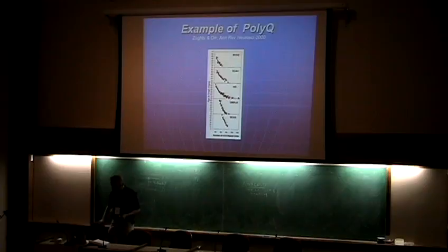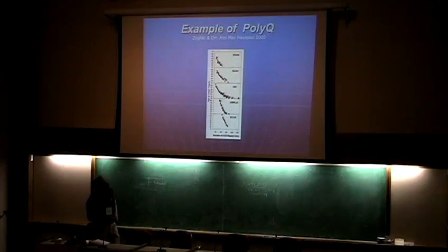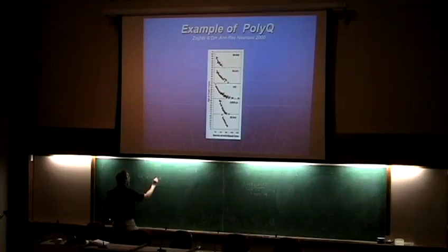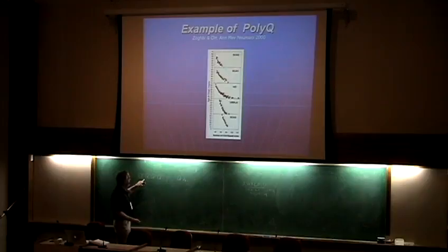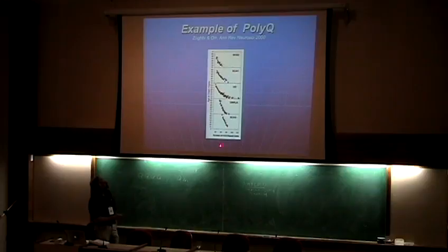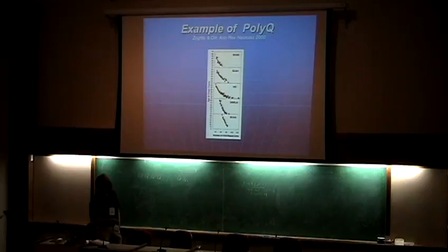A little bit about poly-Q diseases and why they might be amenable to such biophysical treatments. In these proteins, you wind up with continuous stretches of just glutamine being expressed. You have in your protein just some copies of adjacent repeats of glutamine, which is encoded by the codon CAG in the DNA. What has been found for these poly-Q diseases — there's a very nice review you can look up — is that there's an incredibly reproducible correlation between the number of repeat units and the age at onset of the disease.